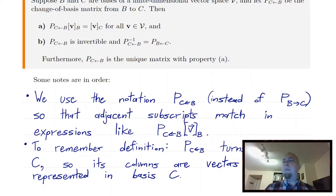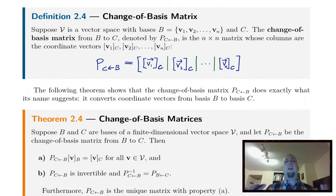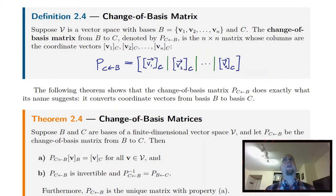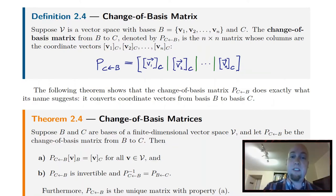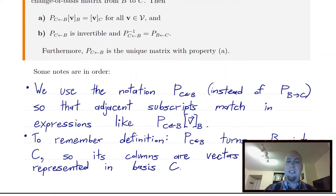A way to remember the definition: it's very easy to get tripped up on whether you represent vectors from basis B in basis C or vice versa. Think of it this way — you're transforming the old basis B into the new basis C. So take the old basis vectors from B and write them in the new basis C. You want to end up with coordinate vectors with respect to basis C, so: take the old, represent them in the new.